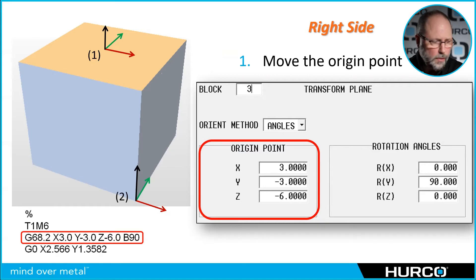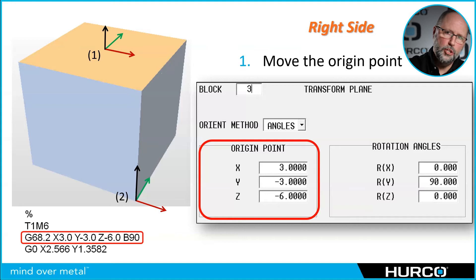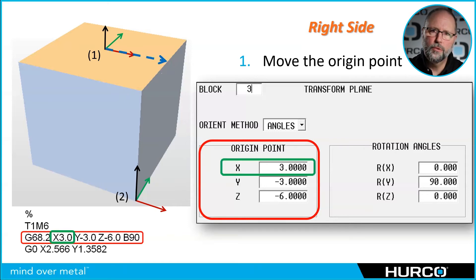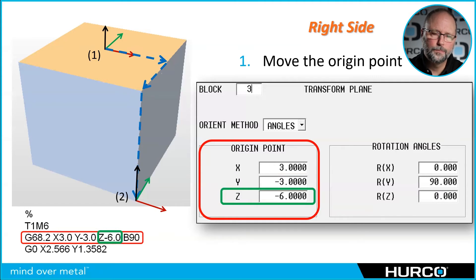Inside the red square, that's where we put our values for the origin point. I'm going to move the zero from location one — the top center of the part — down to location two. That's how I move the origin point to do work on the right side. I put in values which are measured distances from one to two along each axis: positive three inches in X, negative three inches in Y, and drop down the full six inches in Z. That has taken our origin point and moved it down to that bottom corner of the part where it needs to be.